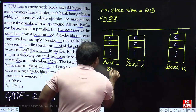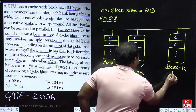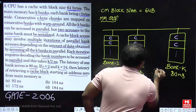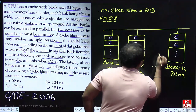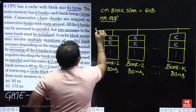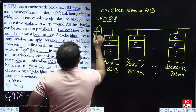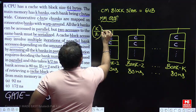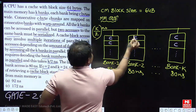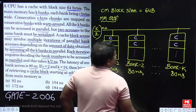Bank latency is given as 80 nanoseconds. Decoder latency is K/2 nanoseconds. After K/2 nanoseconds, the decoder sends the signal to all the banks.